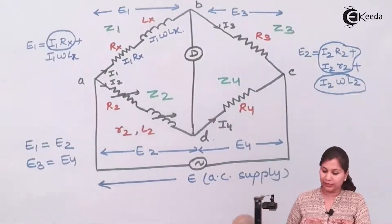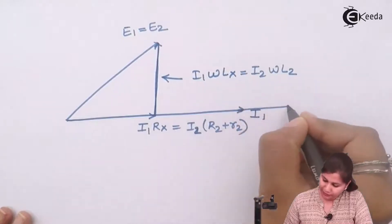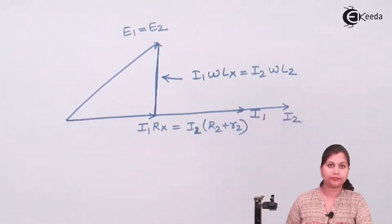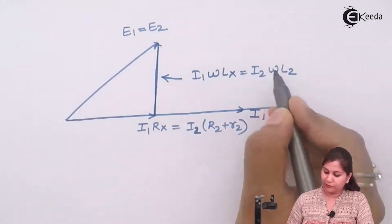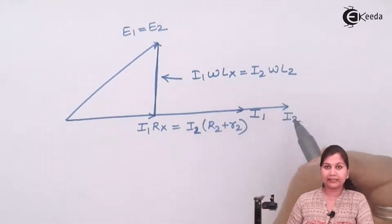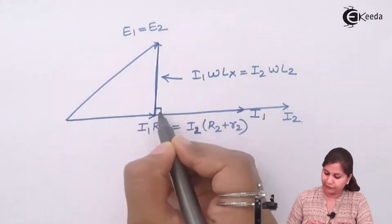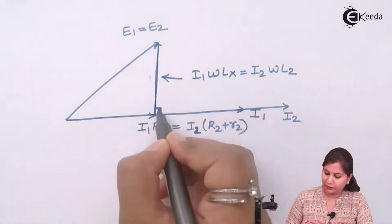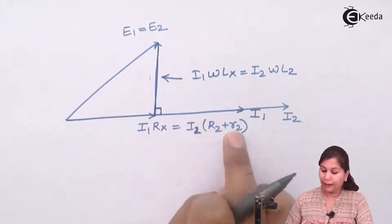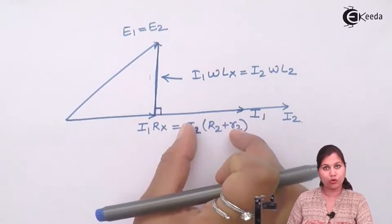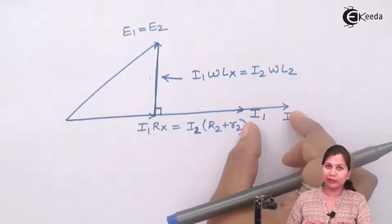We have drawn I1 as the reference phasor. We can draw I2 on the same line. For inductance, voltage and current are 90 degrees apart. So I2·ωL2 is drawn perpendicular, and I2 is 90 degrees lagging behind it. The resistive voltage I2·(R2 + r2) is in phase with the current, so I2 is drawn on the same line.